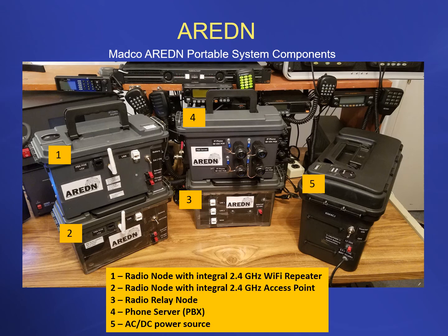The ARDEN mesh network can have a variety of components to provide the services you need to your served agencies or to the network. This is a series of ARDEN nodes that KM4CJ Steve put together for the Madison County Emergency Management Agency. As you can see by the boxes, there's a variety of different types, giving a nice amount of flexibility. The small wireless antenna on the left-hand boxes is where we provide local Wi-Fi for connectivity to your laptop. A node consists of a laptop, one of these node boxes, and the necessary cabling to connect the box to the radio and to the internet.